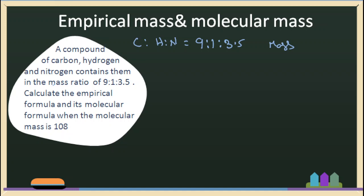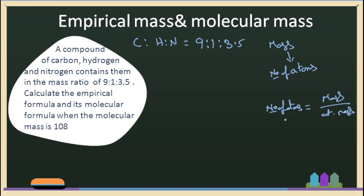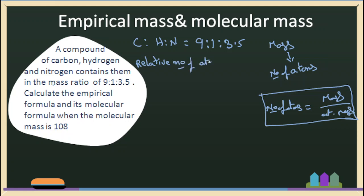The empirical formula gives any number of carbon, hydrogen, and nitrogen. The smallest whole number ratio of the different atoms present in the molecule is the empirical formula. So, we have to convert the mass ratio into the number of atoms ratio. The formula used is: number of atoms = mass divided by atomic mass.